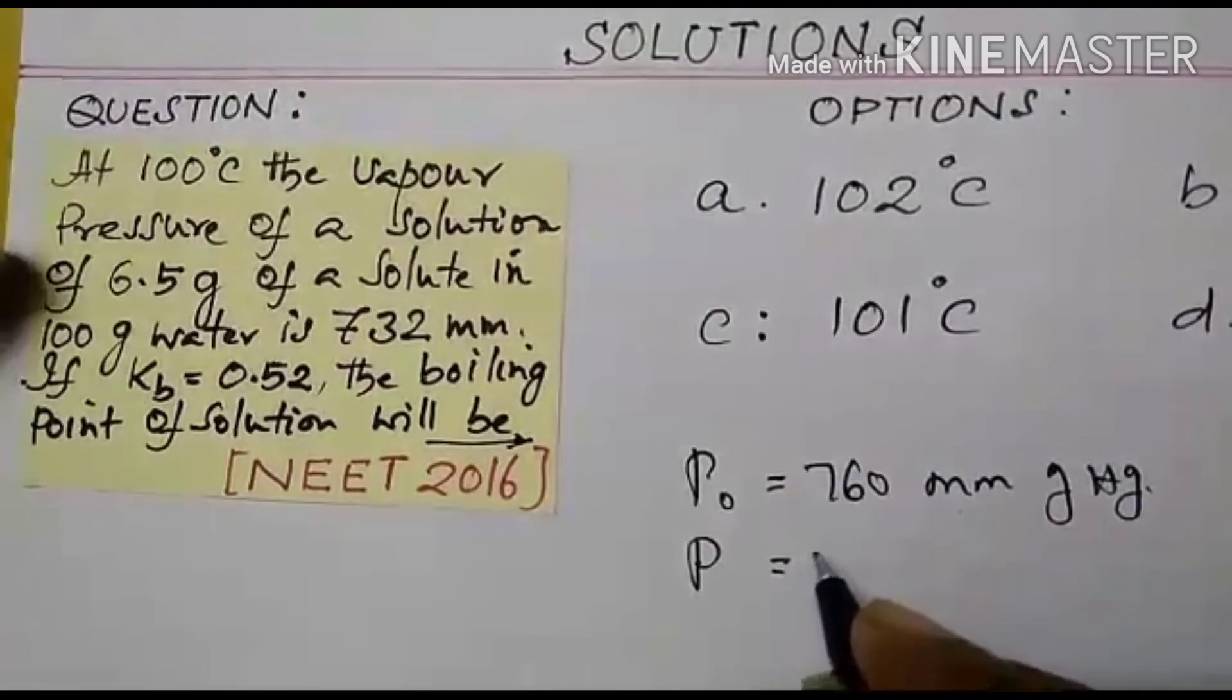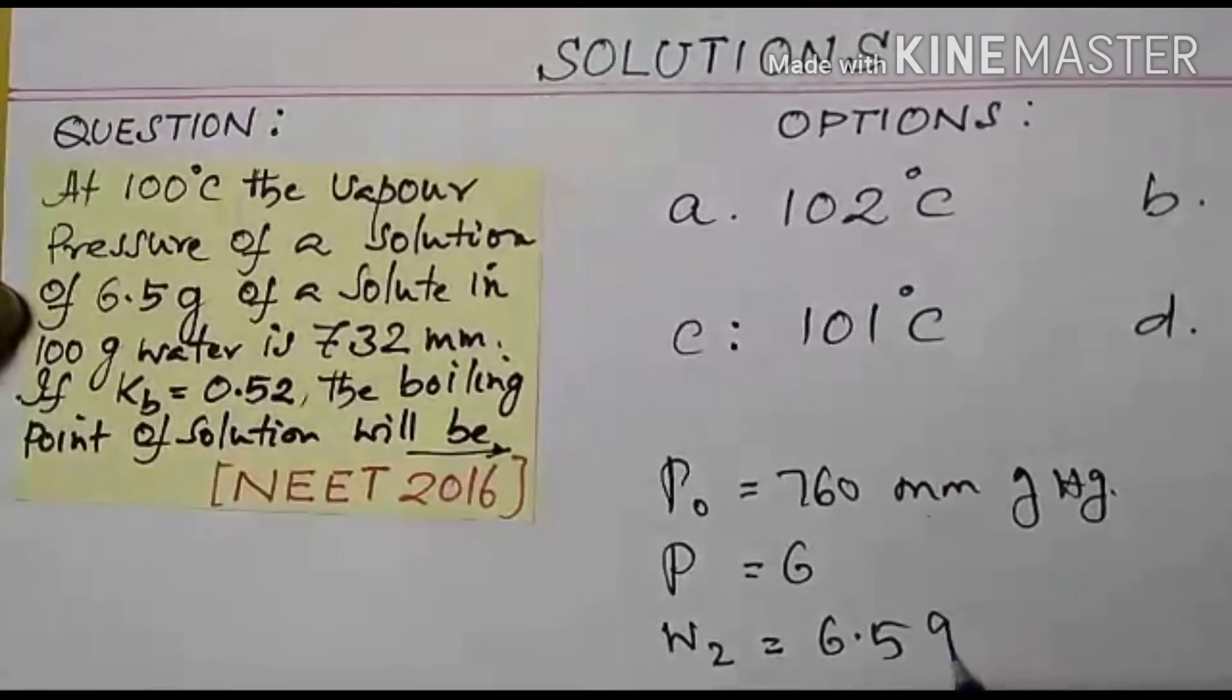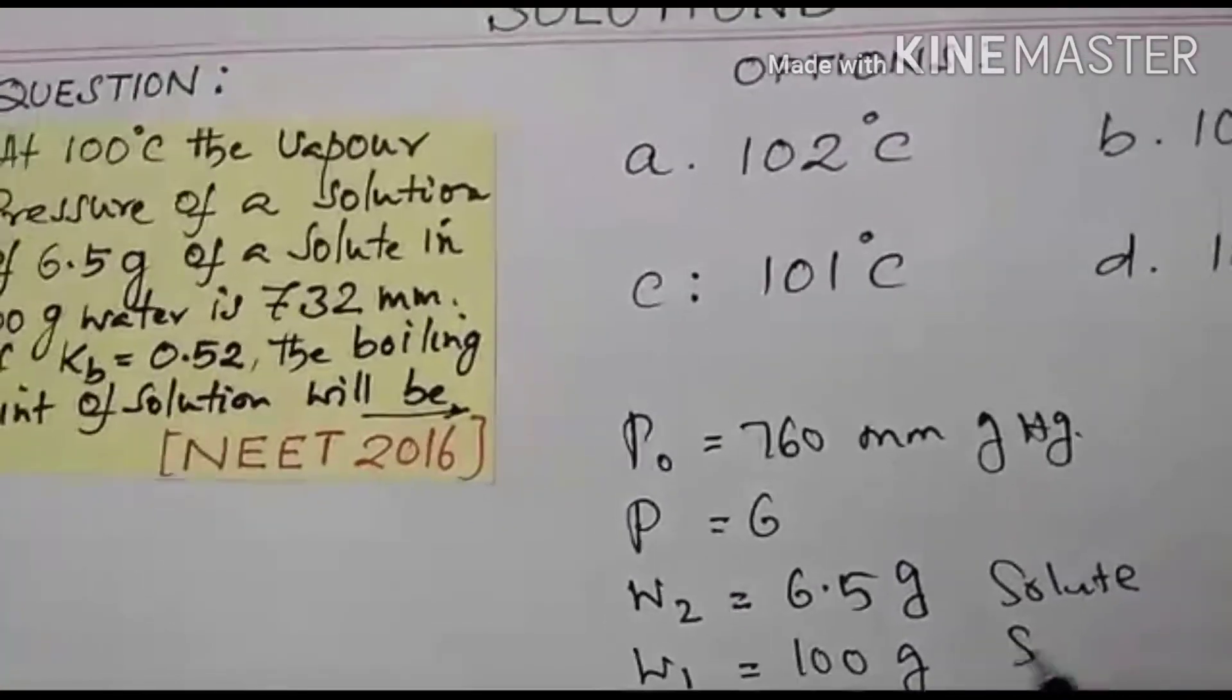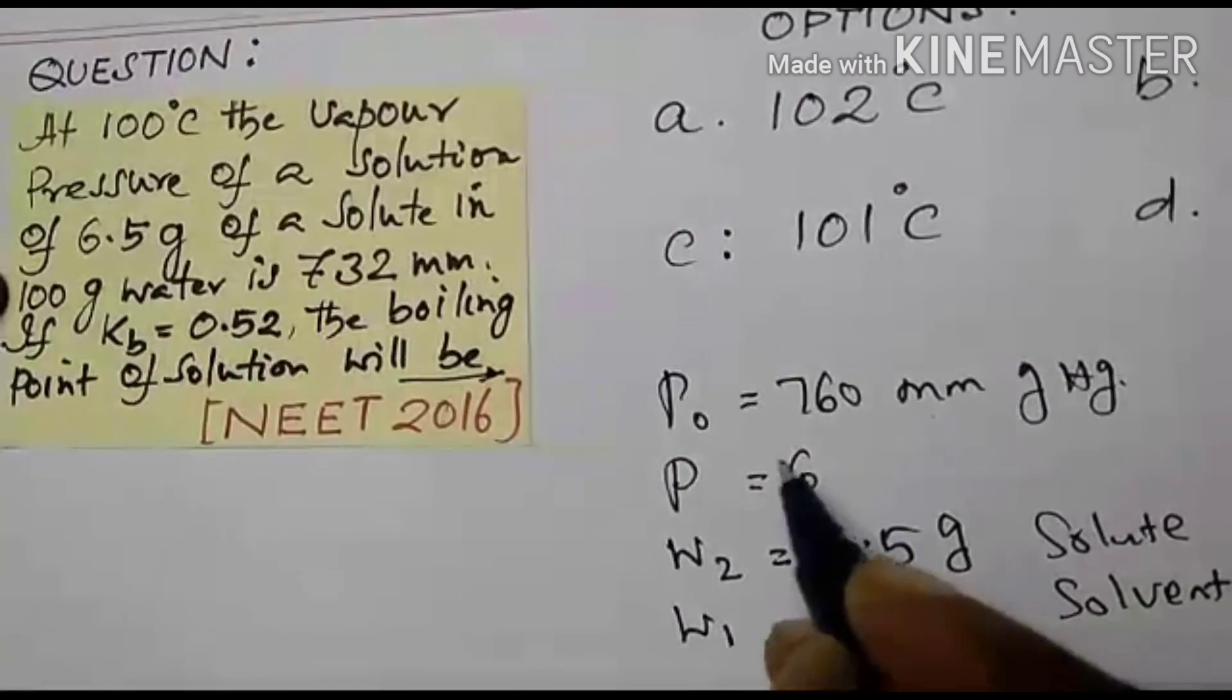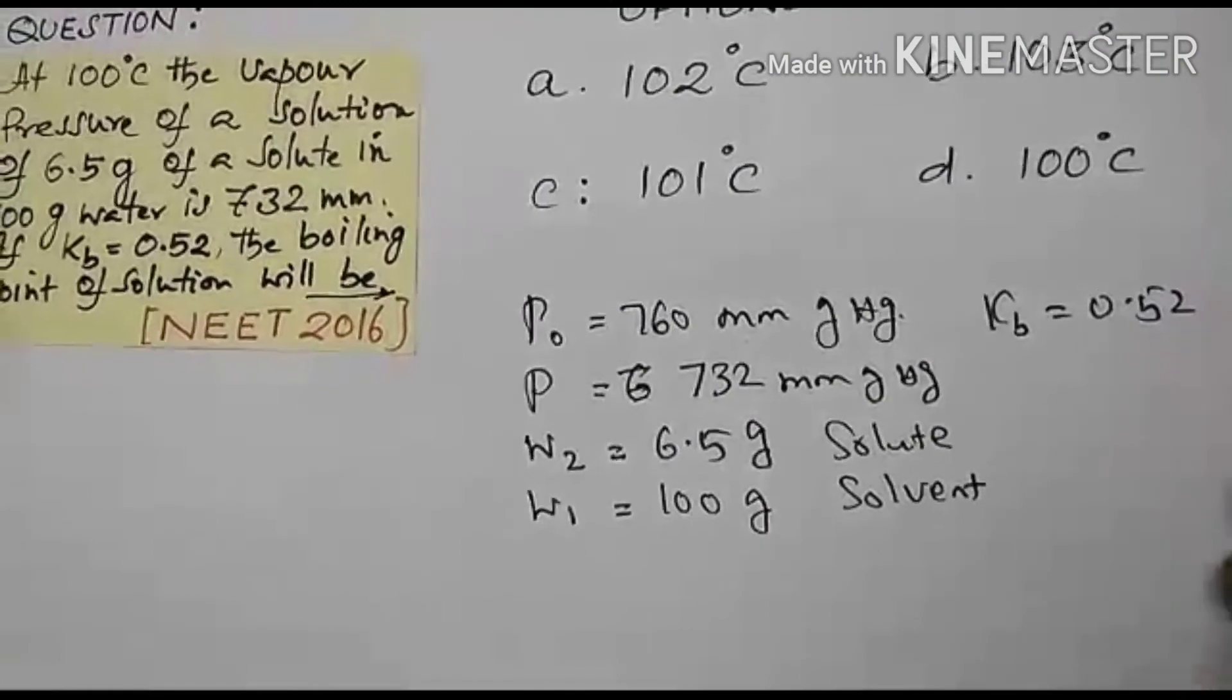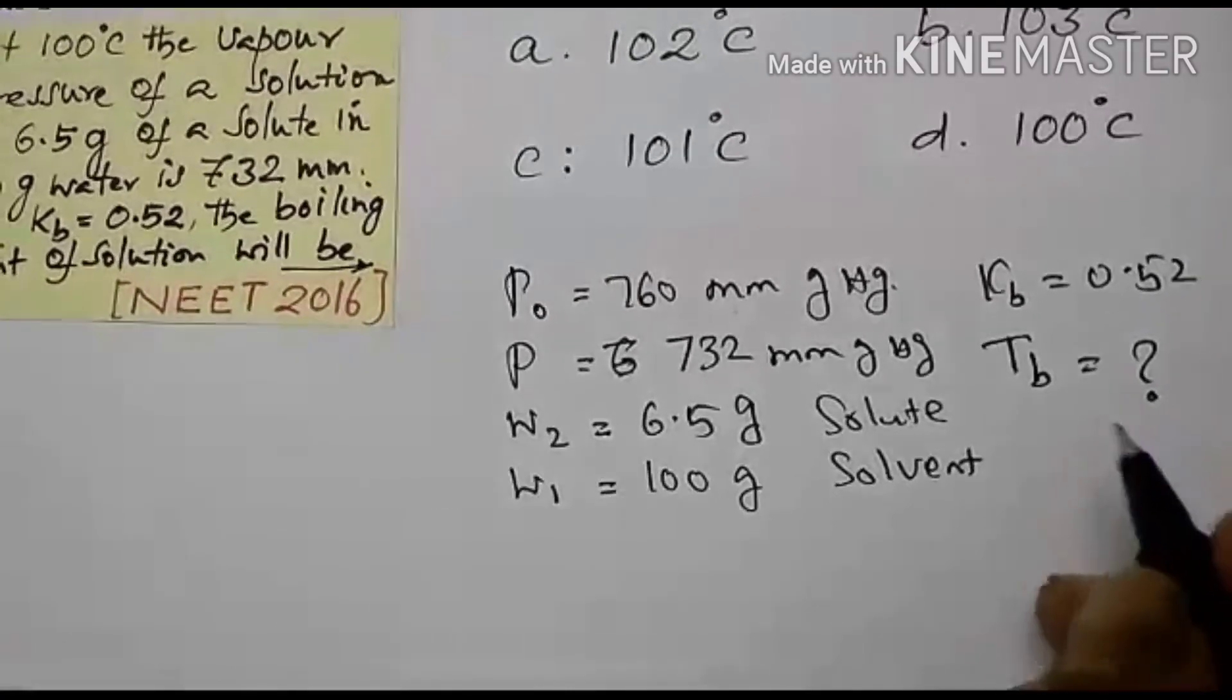P is the vapor pressure of a solution of 6.5 gram of a solute in 100 gram of water. So solute is given W2 is equal to 6.5 gram and then 100 gram of water. It is the solvent is 100 gram. So this always two mean solute. One means solvent. These are the standard norms. So solute is 732 millimeter. I am coming to 732 millimeter of mercury. If Kb is equal to 0.52. If the corresponding unit is not given, of course we can ignore it. The boiling point of the solution will be, boiling point of the solution is Tb is equal to question. So now let us write the formula for Tb.